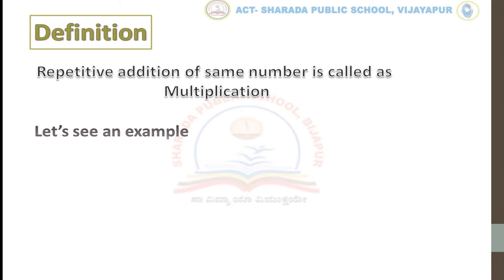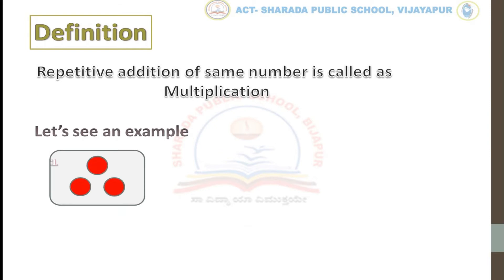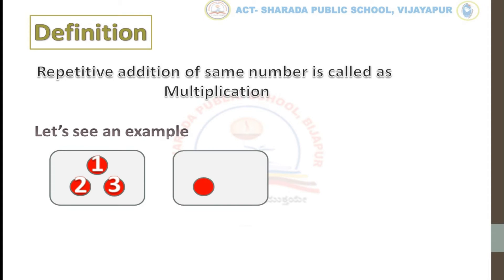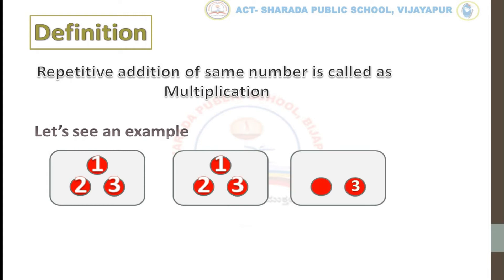Let's see an example. Here we have box 1. In this box we have 3 balls: 1, 2, 3. And next we have one more box. In this box we have 3 balls: 1, 2, 3. Next, in the third box we have again 3 balls.